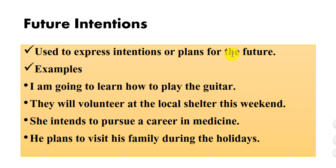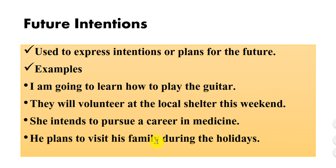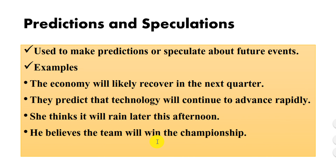Number two is future intentions. The future tense is used to express intentions or plans for the future. For example: I am going to learn how to play the guitar; they will volunteer at the local shelter this weekend; she intends to pursue a career in medicine; he plans to visit his family during the holidays.